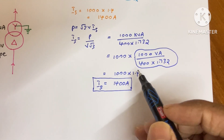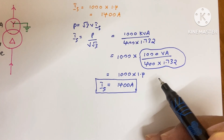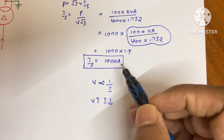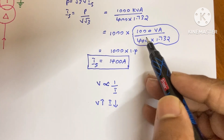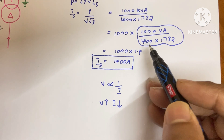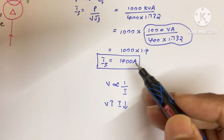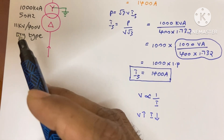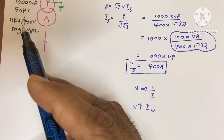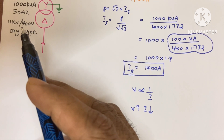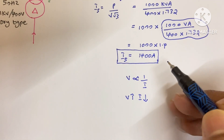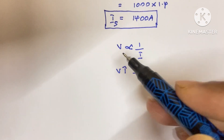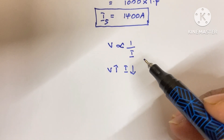This trick will be very useful when you go for an interview — it will save your time. Note that the secondary side current is very high due to the low voltage of 400 V on the secondary side. When we find the current on the primary side, it would be very much less because the primary voltage is 11 kV. Whenever the voltage is higher, the current will be lower — voltage and current are inversely proportional.